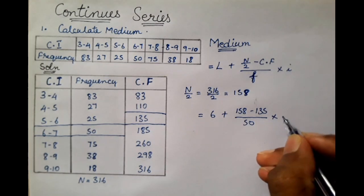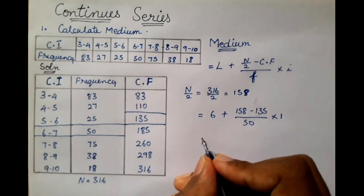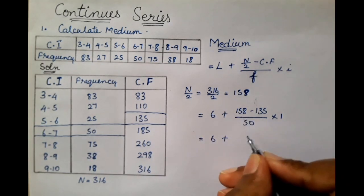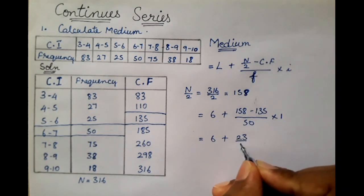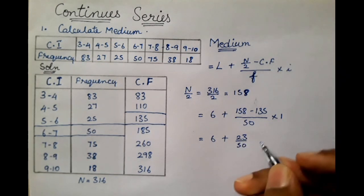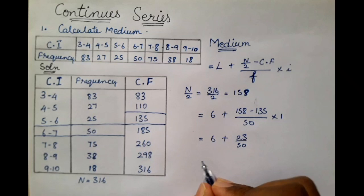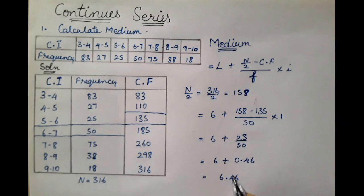So 6 plus 23 divided by 50 equals 6 plus 0.46. So the answer is 6.46. This is the final answer for the median.